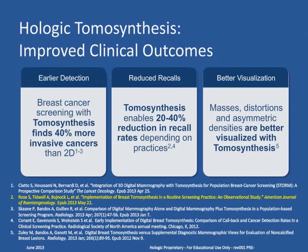In reading mammograms, we're looking for specific lesions — in particular masses, architectural distortions, and calcifications. Because individual calcifications may be depicted on multiple slices in the 3D study, they're sometimes better and more quickly appreciated on the 2D projection image. On the other hand, by minimizing structure overlap, masses and architectural distortions are actually better depicted on the 3D study.